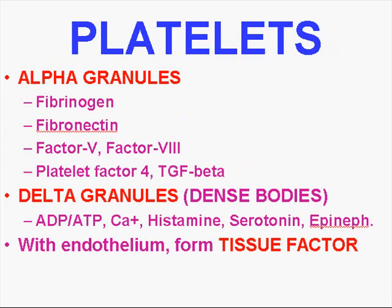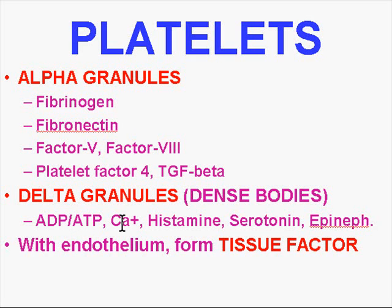Let's talk about our second big player: platelets. Platelets have alpha granules and the denser delta granules — D for delta for dense. Alpha granules contain fibrinogen, fibronectin, factor 5, factor 8, platelet factor 4, and transforming growth factor beta. Delta granules, which are bigger, denser, and darker, contain ADP/ATP, calcium, histamine, serotonin, and epinephrine. These are all the primary things which are released when platelets undergo degranulation.